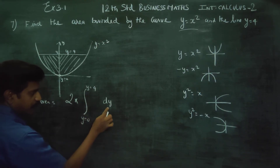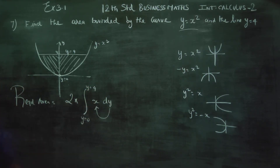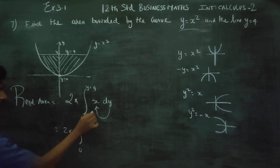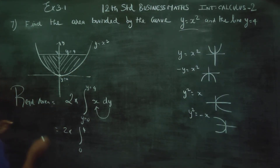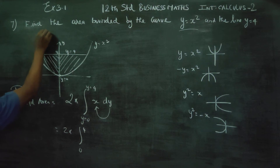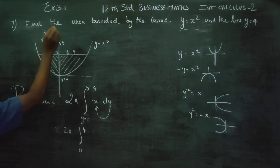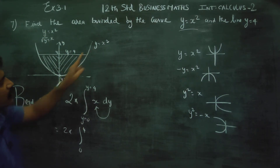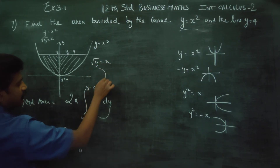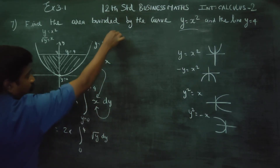The formula to find the area is 2 into integration from 0 to 4. Since y is equal to x square, x is equal to square root of y. So we write x as square root of y dy.